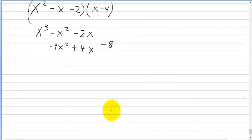So now I just add them up. So x³ is going to just drop down, that's just going to be x³. Next is -x² plus -4x², that'll just be -5x². This is going to be -2x plus 4x plus 8.